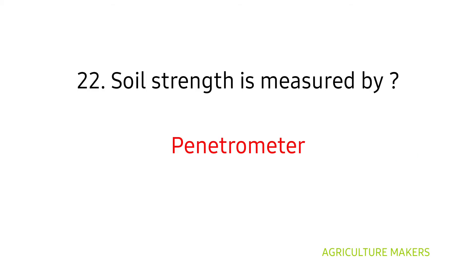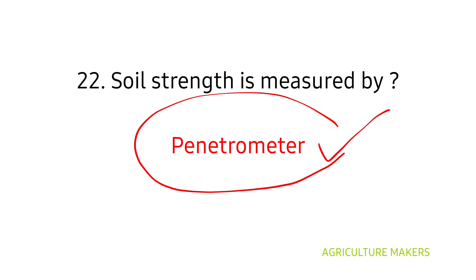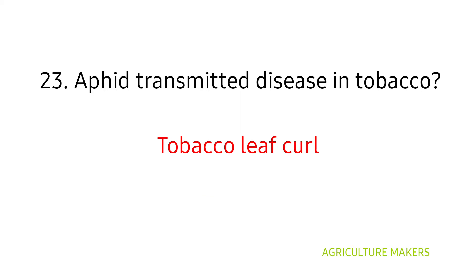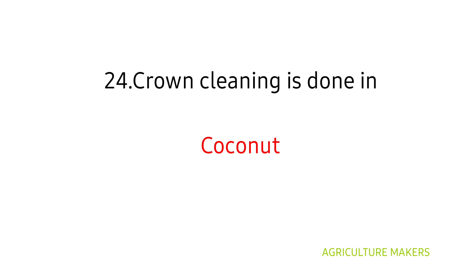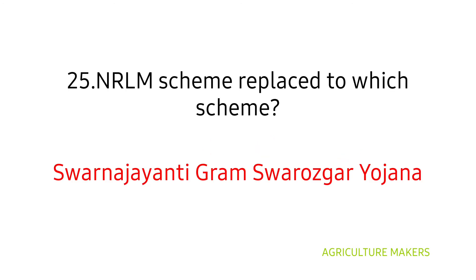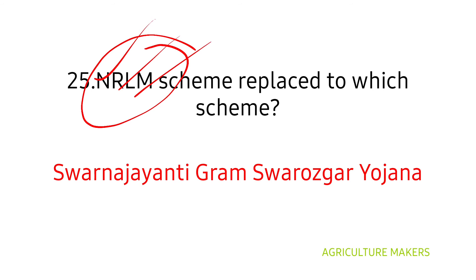Soil strength is measured by a penetrometer, which is also used for measuring the firmness of fruits, so consider all options carefully. The epidemic disease in tobacco is tobacco leaf curl. Crown cleaning is done in coconut. NRLM (National Rural Livelihood Mission) — which scheme was it replaced from? It replaced Swarna Jayanti Gram Swarozgar Yojana.